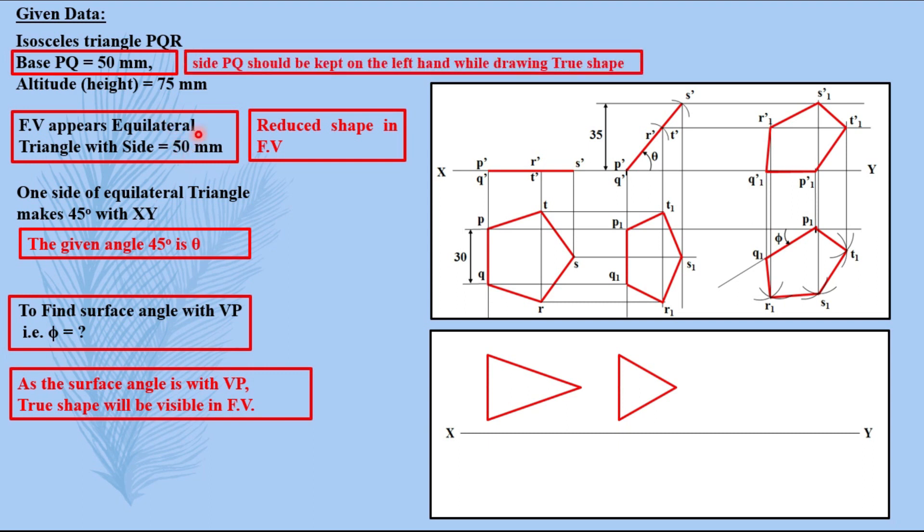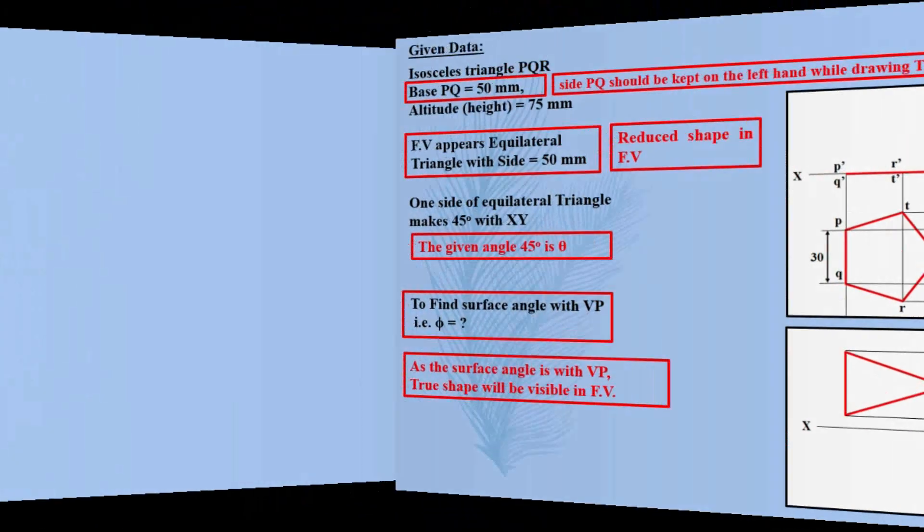This is the true shape which is isosceles triangle 50 mm base and 75 mm height. Out of these two dimensions, 50 matches with this equilateral triangle size. So this dimension which matches should be kept on the left hand side while drawing the true shape. It should be kept perpendicular to XY, that's the trick. So it can be carried as it is in the second stage.